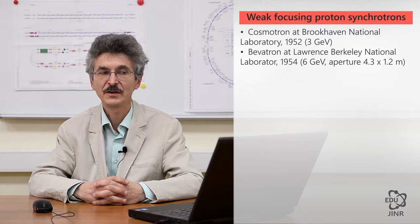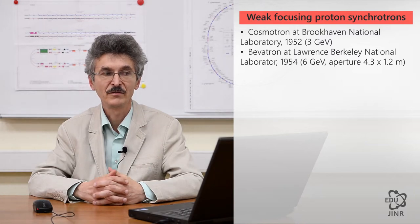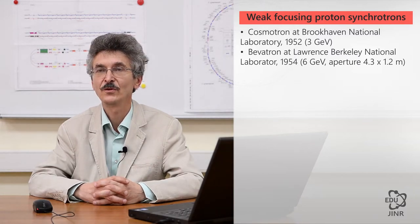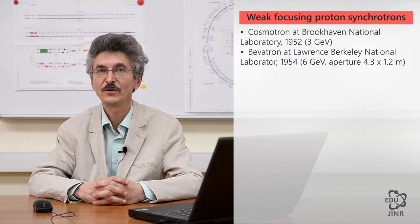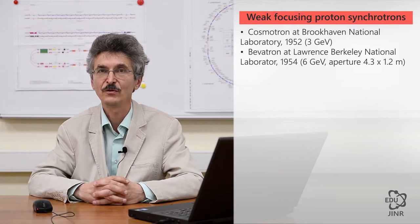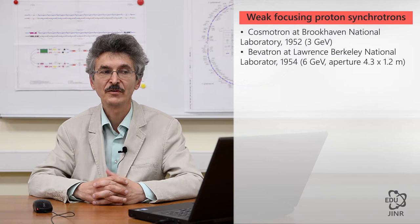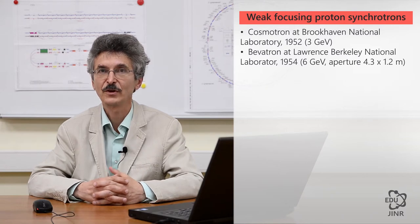In 1954, a large synchrotron known as the Bevatron was constructed at Berkeley. The energy of accelerated protons reached six gigaelectron volts. The Bevatron was built for a particular task of physics, the discovery of the antiproton. It became operational in 1954.